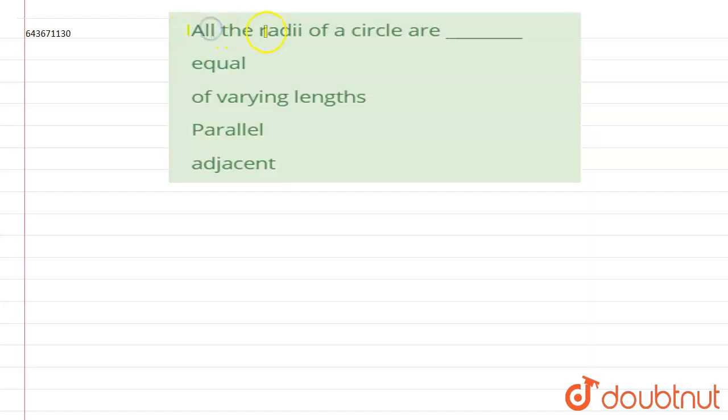All the radii of the circle are: equal, of varying length, parallel, or adjacent.